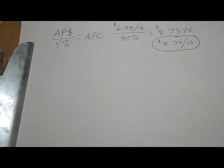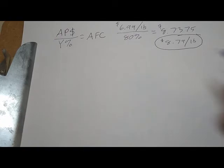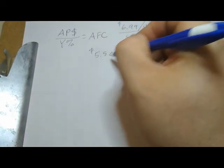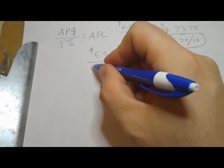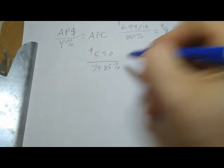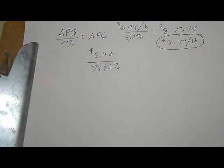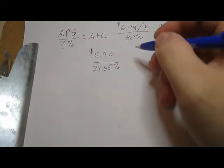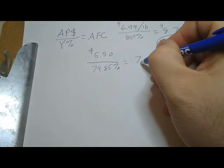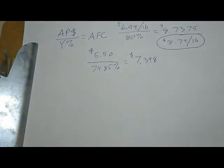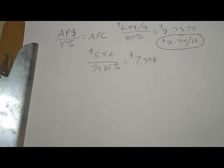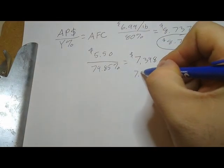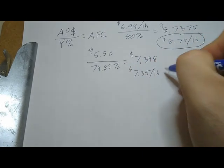Using the other example from previous, if we got the rib eye for $5.50 a pound and the yield percentage was 74.85% — from the previous lesson on finding yield percentage — you take $5.50 divided by 74.85%, or 0.7485, and that would equal 7.348. Rounding to the nearest penny, that gives us $7.35 per pound.